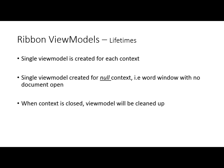View models also have lifetimes. So we were talking about a single instance for each context. We'll also create an instance of a view model for a null context. This is for the scenario where you close all of the windows and all of the documents down and you're left with the empty window. You still want to be able to interact with the ribbon potentially, depending on your add-in. By creating a view model that has no context, it allows you to do that. When we close the document or the window, it will clean up your view model.